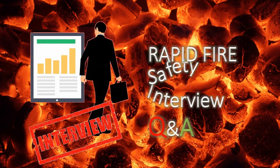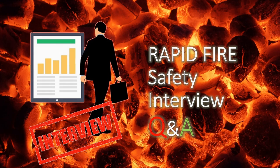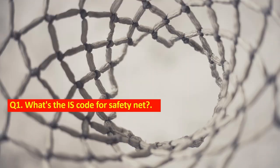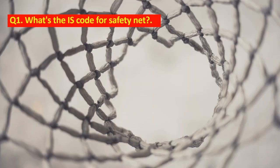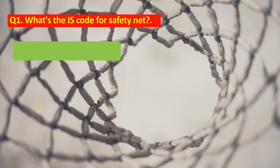Rapid fire safety interview question and answer. Question number 1: What is the IS code for safety net? It is IS-2105 introduced in 1984.